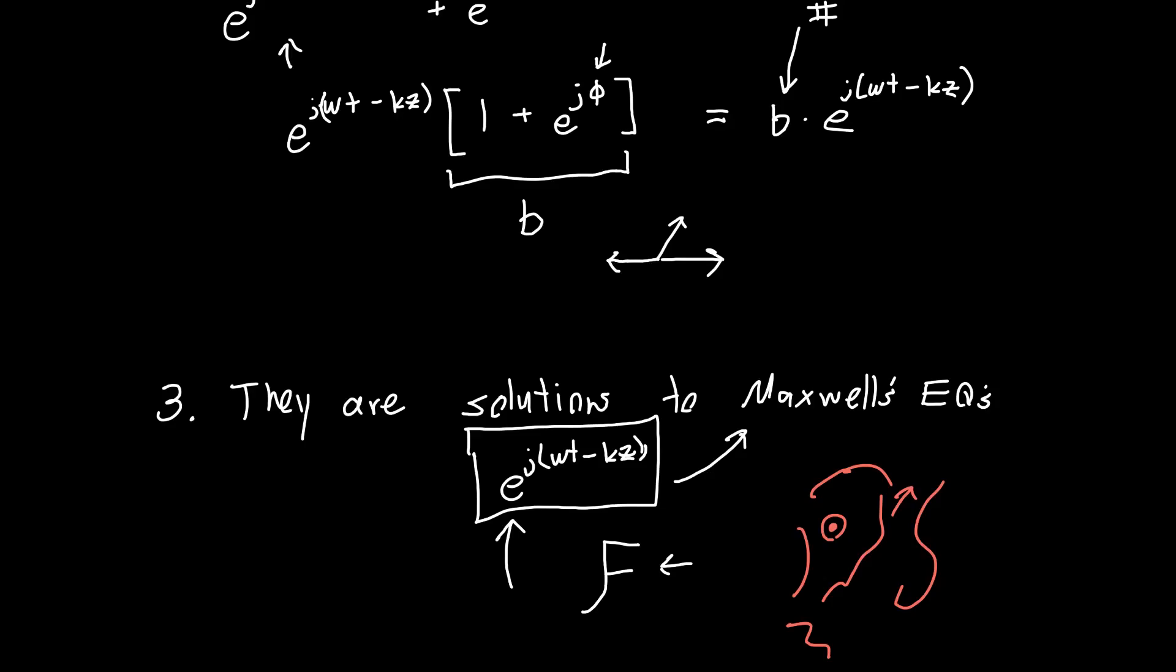So, and this is a direct solution to Maxwell's equations. Like you write down Maxwell's equations. Curl of E minus db dt. Curl of H is equal to dd dt plus j. Like these are, and then your other two Maxwell's equations. If you just plug these in, they are actually direct solutions to Maxwell's equations.